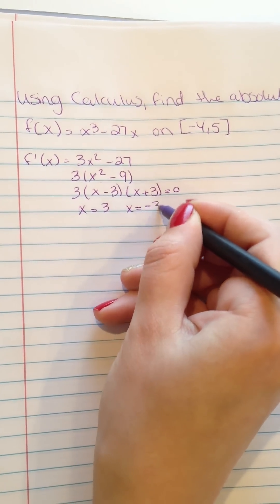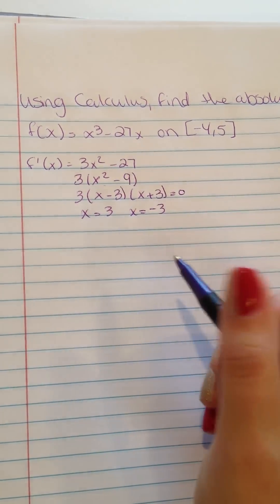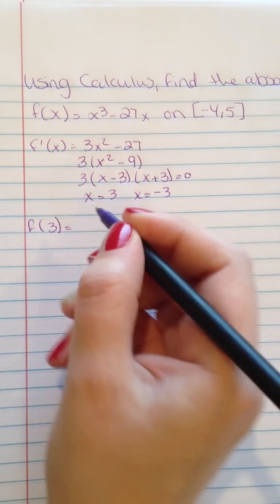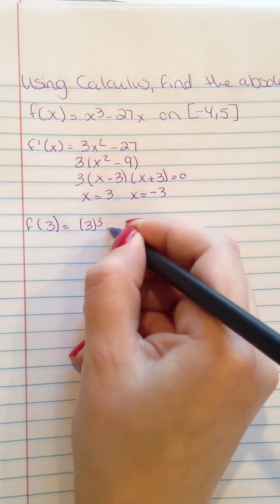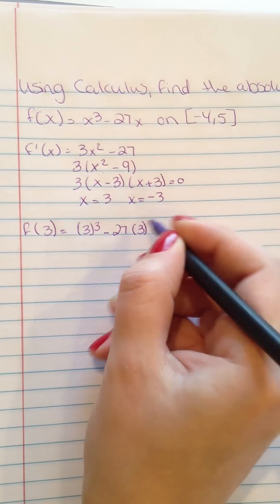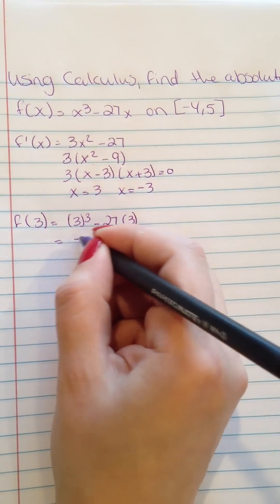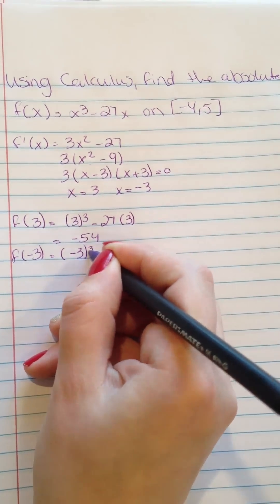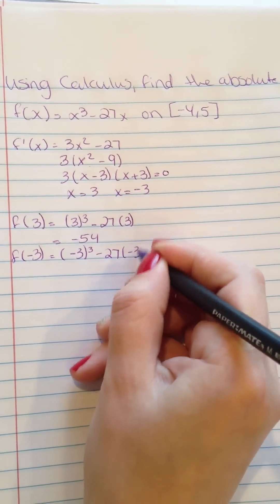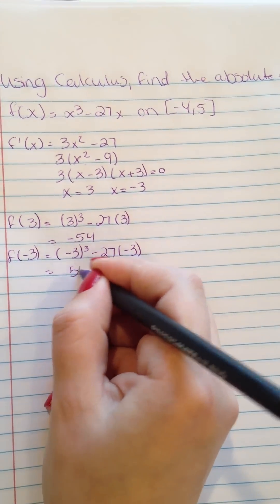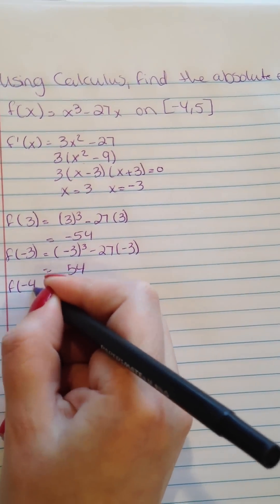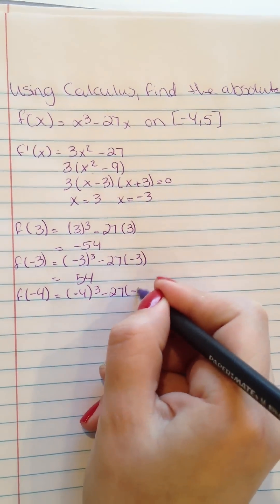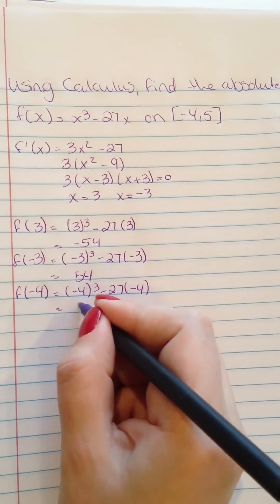And then we have to put it in the equation to see the absolute maximum. f(3) is going to be 3³ - 27(3), and then it's going to equal -54. f(-4) equals (-4)³ - 27(-4), and then it's going to be 44.